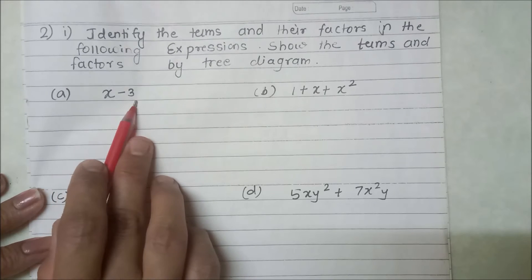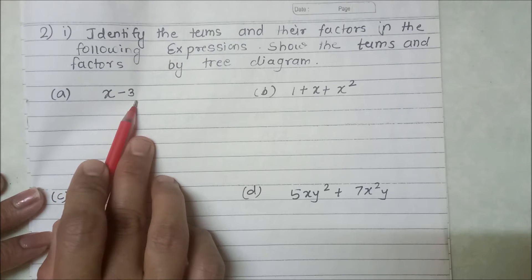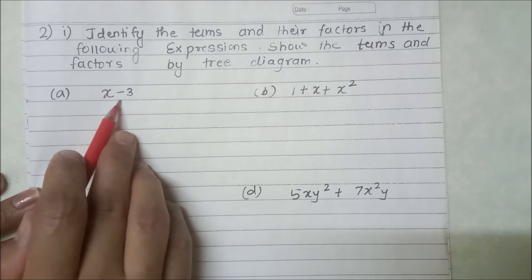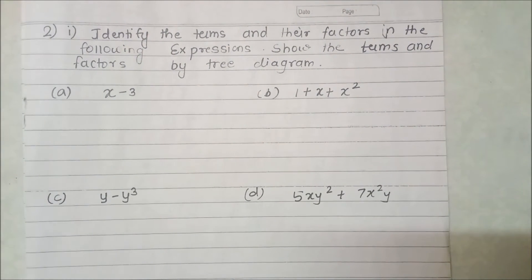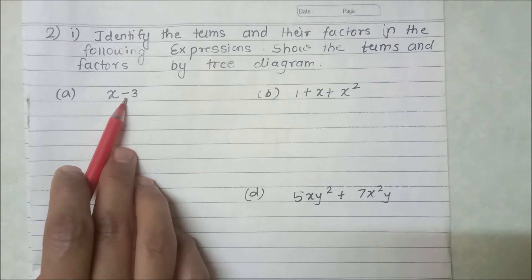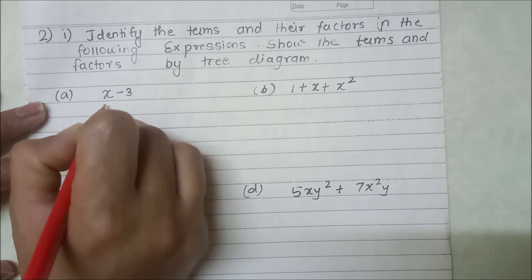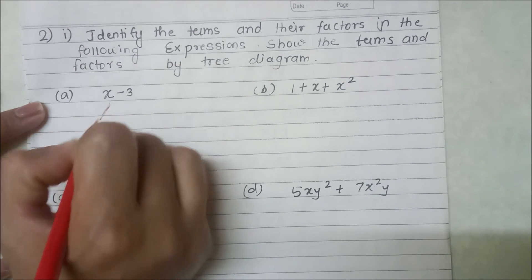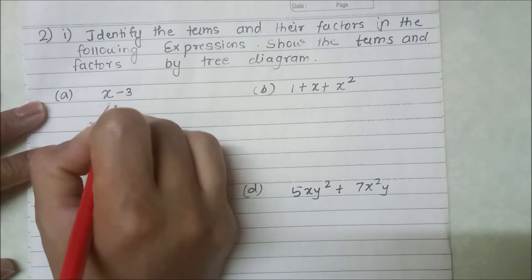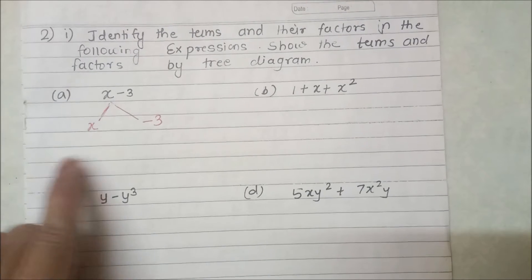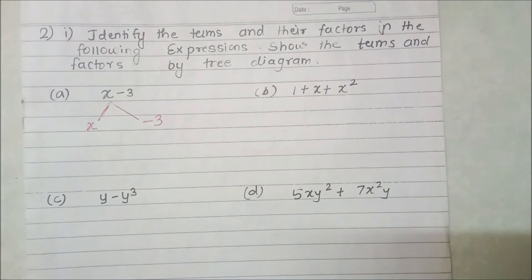For the expression x minus 3, we look at which operations are present and how many terms there are. If there are two values under one operation, it means there are two terms. So the two terms are x and minus 3.